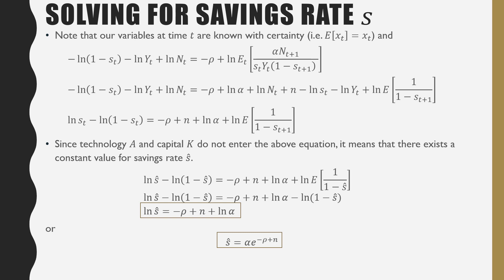Note that technology A and capital K do not enter the above relation that we have. This means that our savings rate, whether it be at time T or time T plus one is constant. So you have this constant savings rate value S hat. Some further algebra shows that our log savings rate is equal to negative rho plus N plus log alpha. Or if we're just looking at this constant savings rate itself, S hat is equal to alpha times e raised to the power of negative rho plus N.